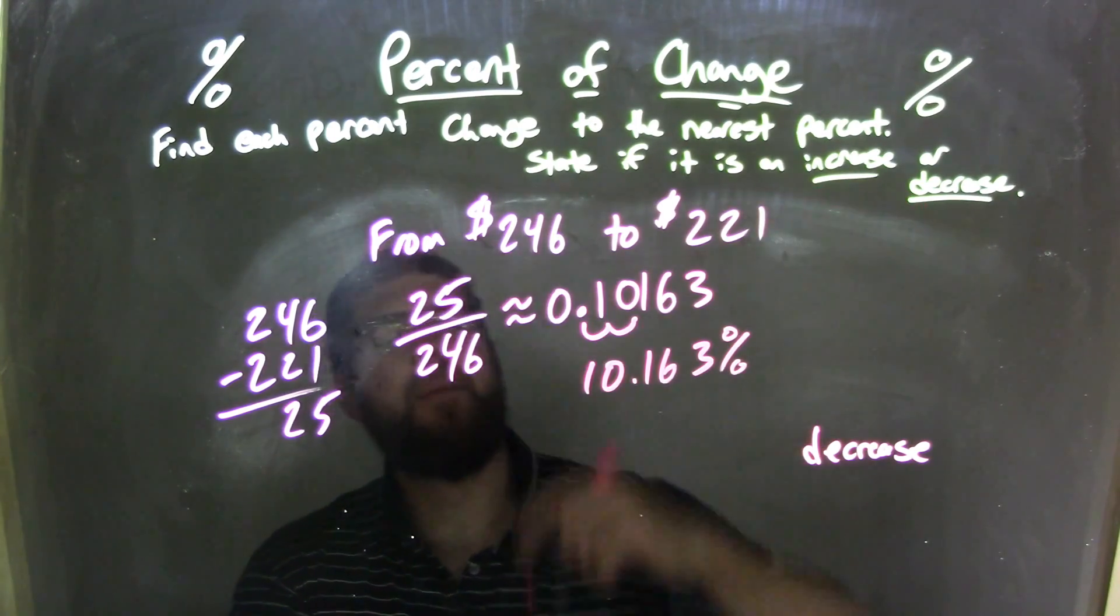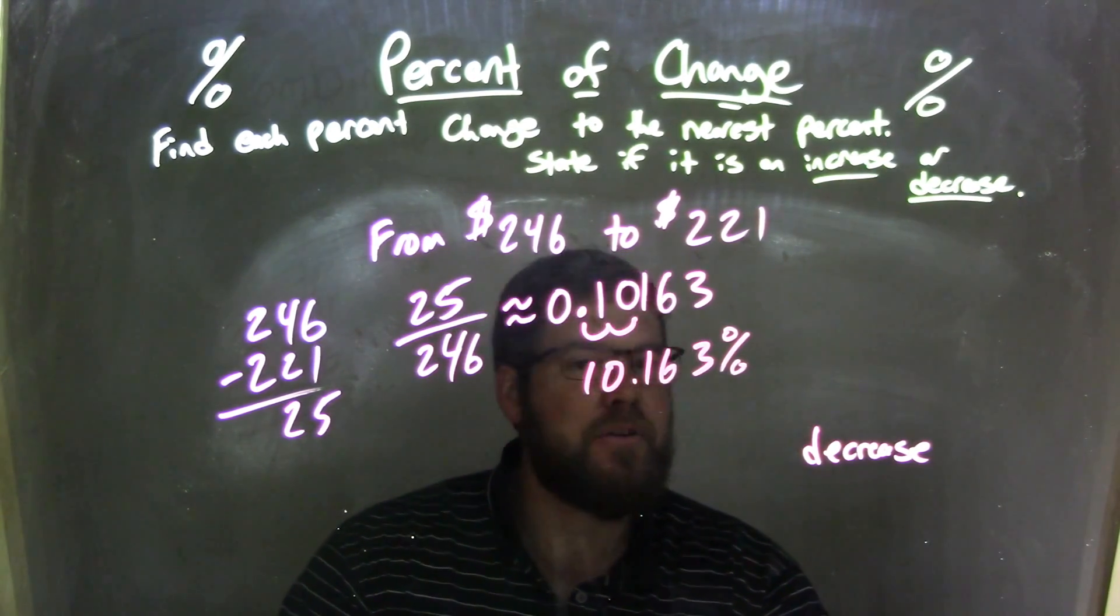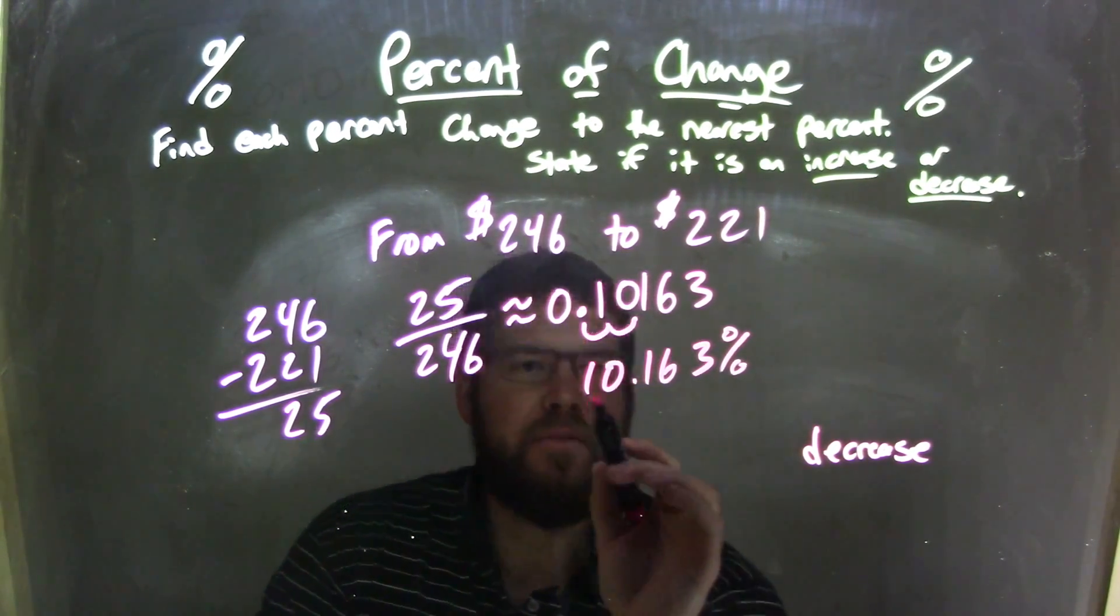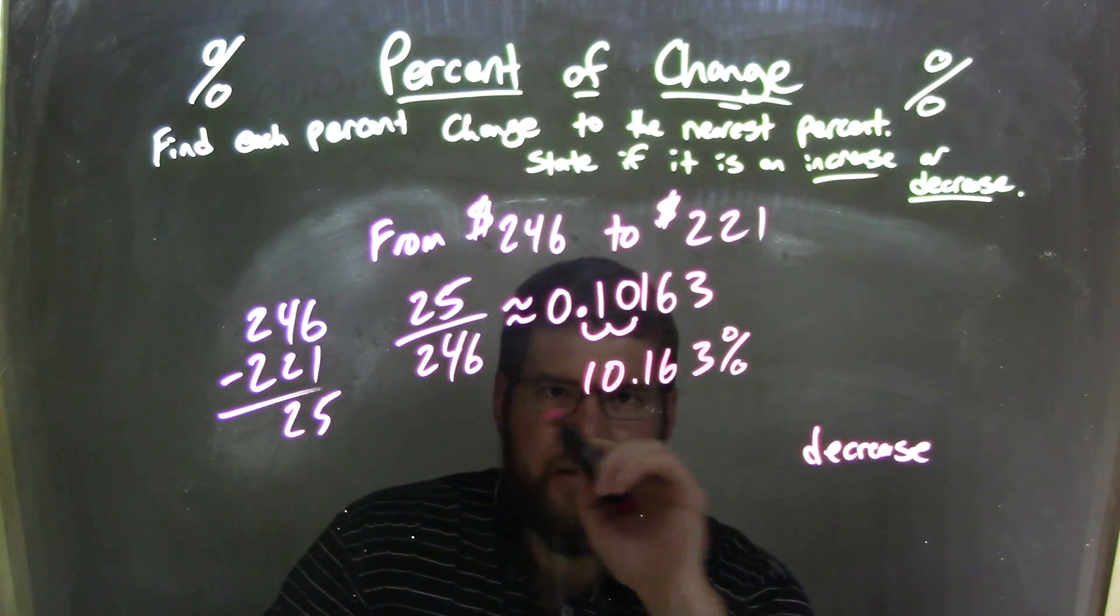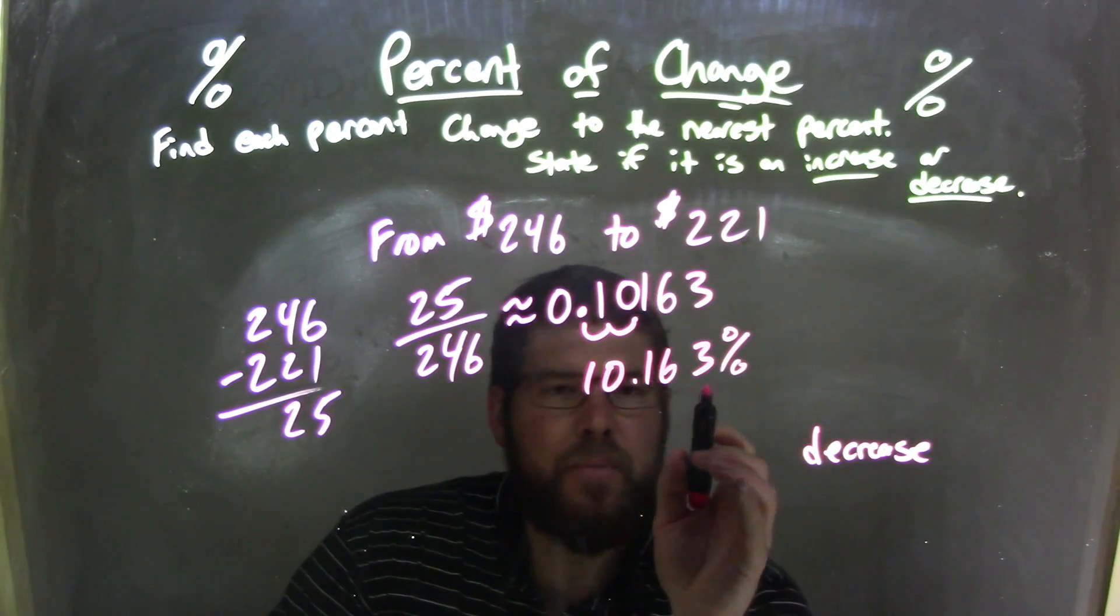but we're not done. That percent, we need to round to the nearest percent. The nearest percent is just the whole numbers here. So 10.163 percent, that 1